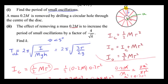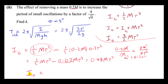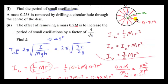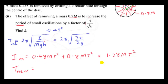Now we are interested in oscillations of this ring about point O. We need the moment of inertia of the compound pendulum about O. Using the parallel axis theorem: I_O = I_C + (mass)(distance)². The mass remaining is 0.8M (since 0.2M was removed), and the distance from center of mass to O is R. So I_O = 0.48MR² + 0.8M·R² = 1.28MR².